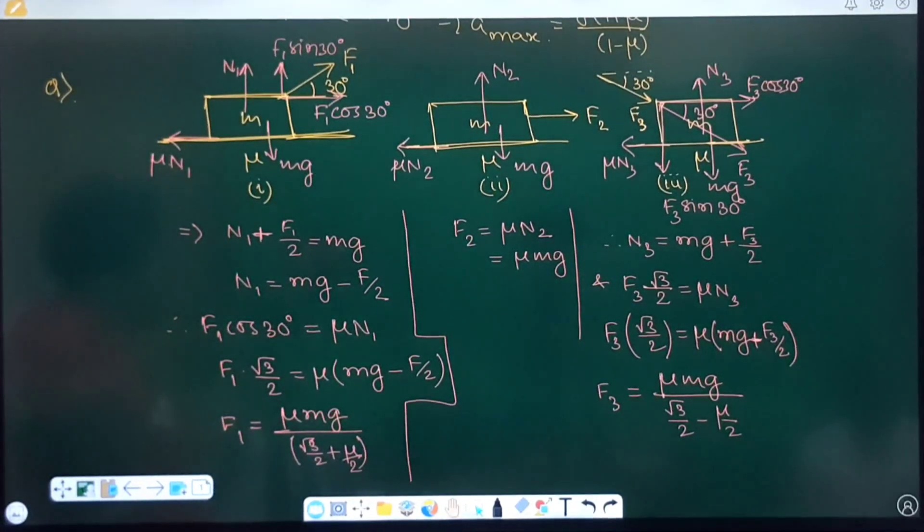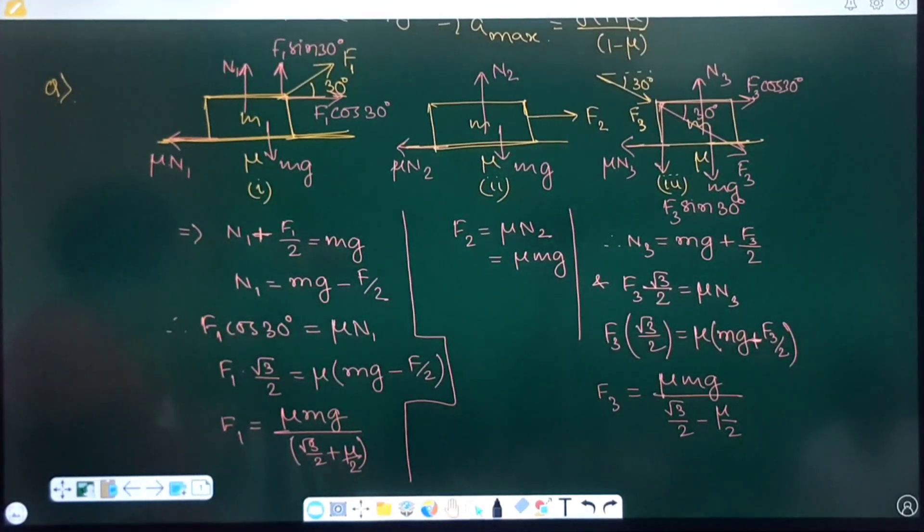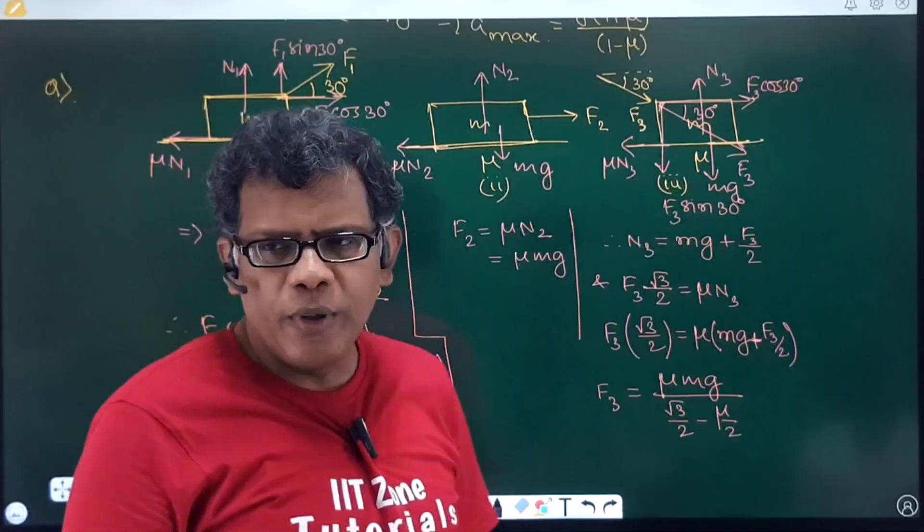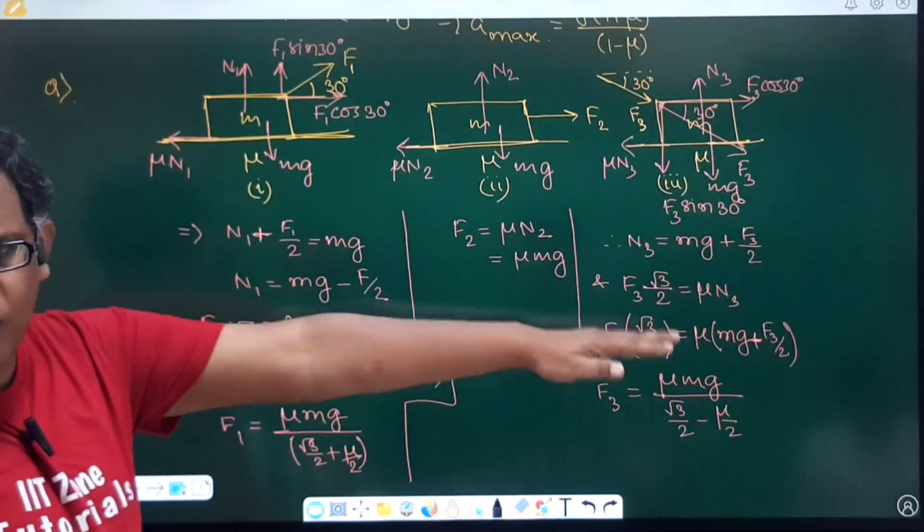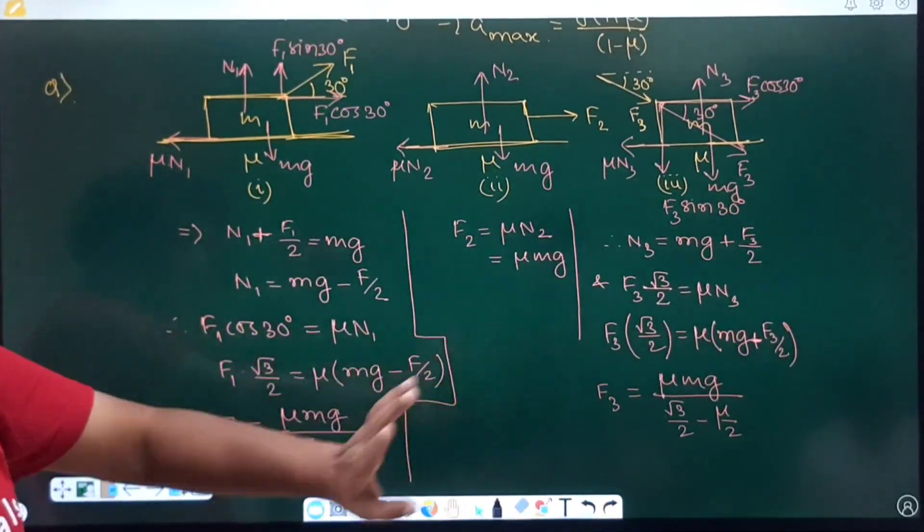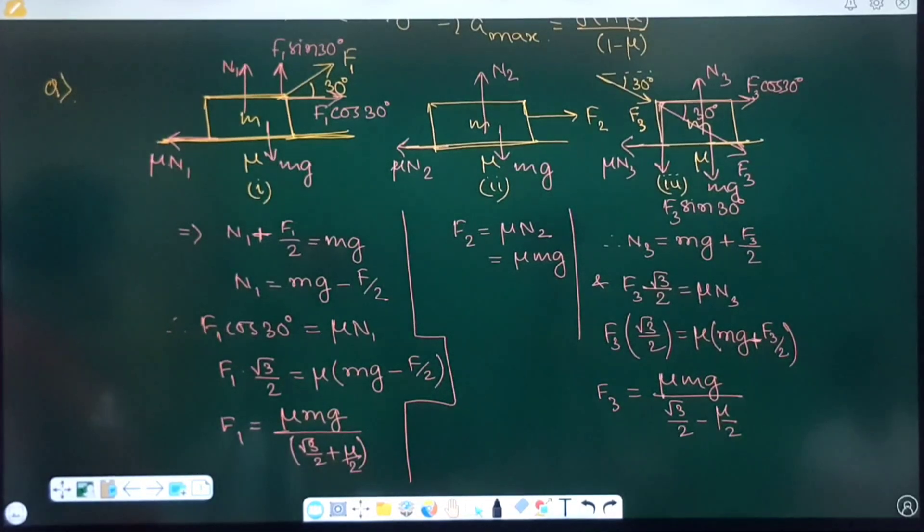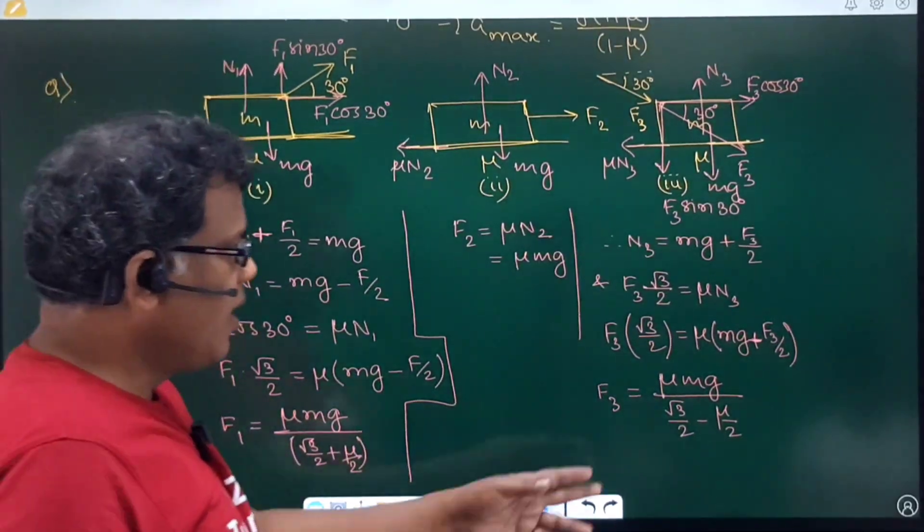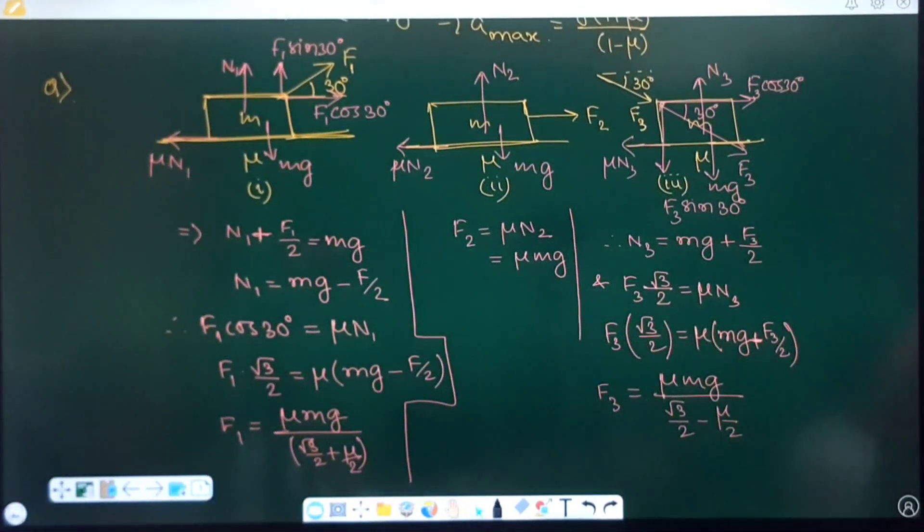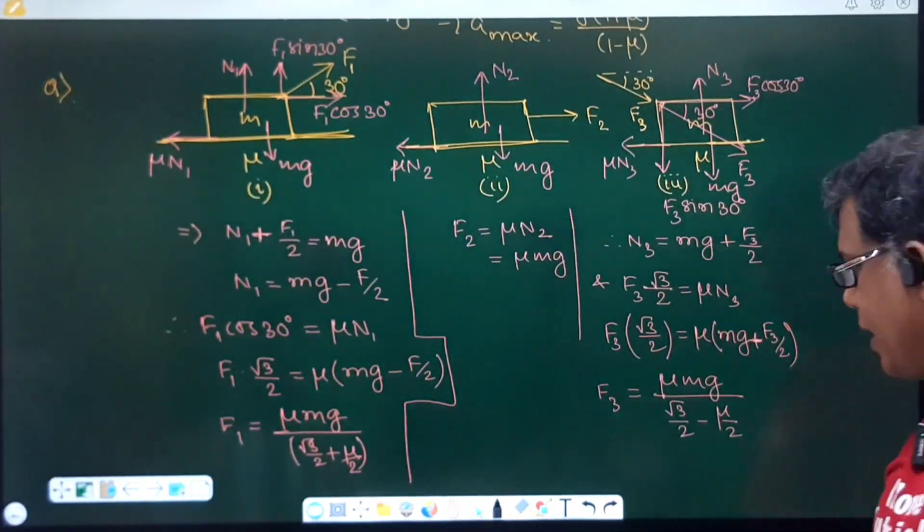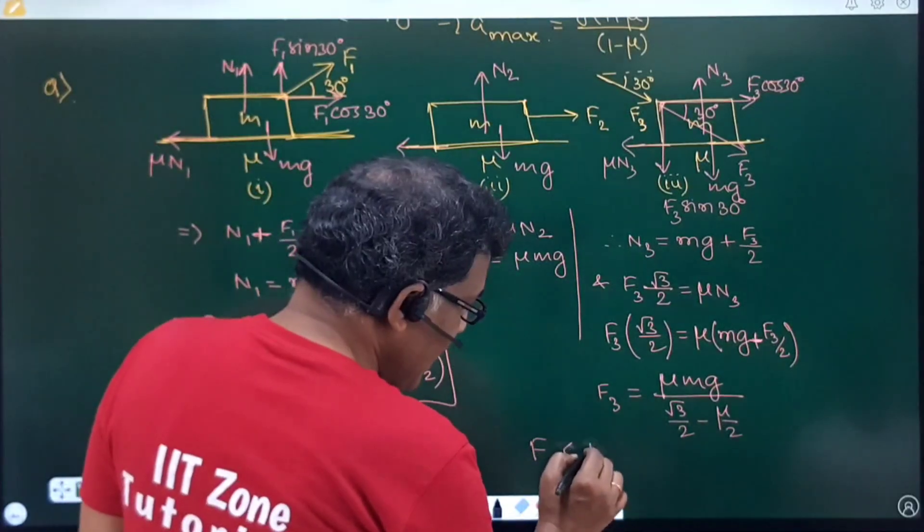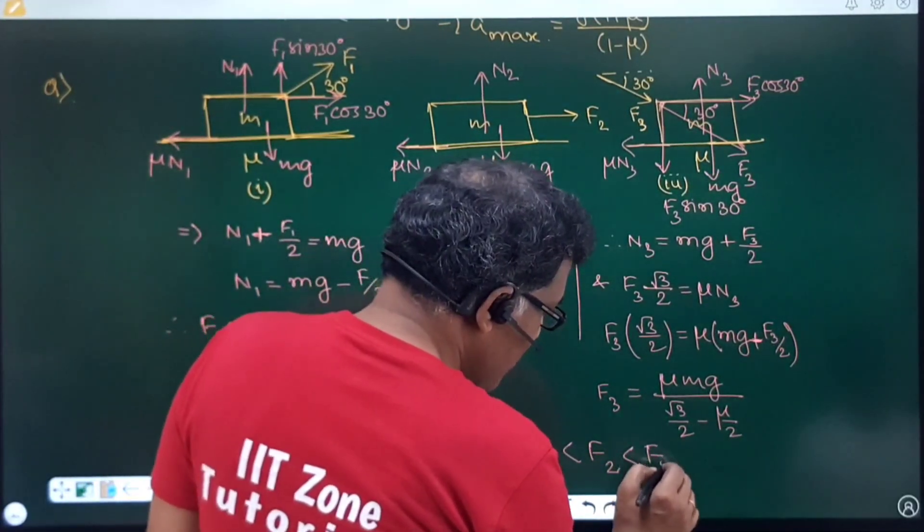So, least the limiting friction, least you need to apply an effort. More the limiting friction, more you need to apply an effort. So, I have completed it not only by this argument, I have completed it with the calculation also. You can see all three calculations, the numerator part constant that is mu Mg. So, whoever having minimum denominator must be having maximum force. So, in the third case, you can see minimum value of denominator, resulting that is the maximum magnitude of the force applied in three cases. So, the sequence will be F1 less than F2 which is less than F3. This will be the answer.